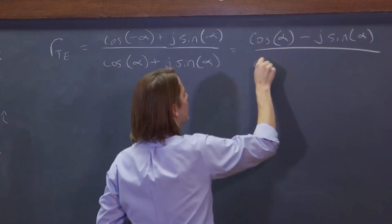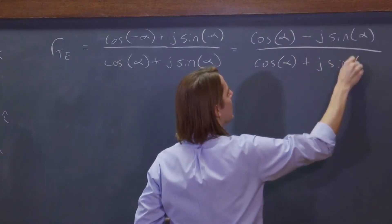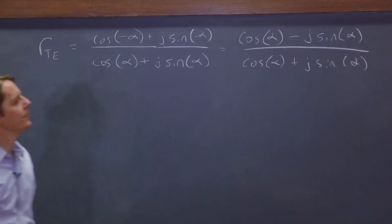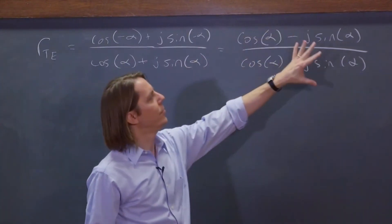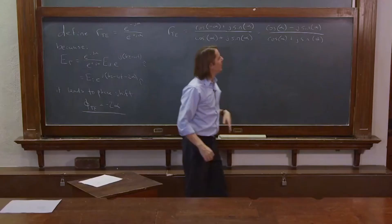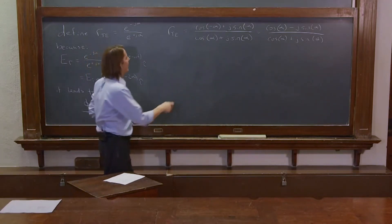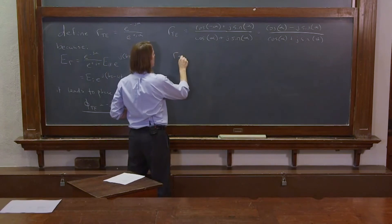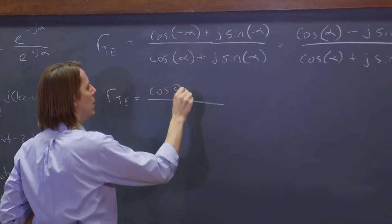And in the bottom, you don't have to do anything: cosine alpha plus j sine alpha. So that's the way you could write RTE. And maybe now you can start to see why we did it this way. This is starting to look like the form of RTE from Fresnel's equations. In fact, we could say RTE equals, and it was cosine theta i.